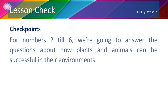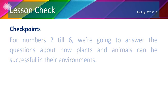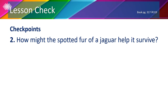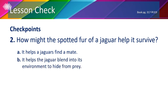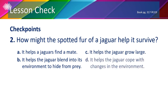For numbers 2 through 6, we'll answer questions about how plants and animals succeed in their environments. Number 2: how might the spotted fur of a jaguar help it survive? The spots help the jaguar blend into its environment to hide from prey, so the answer is B.